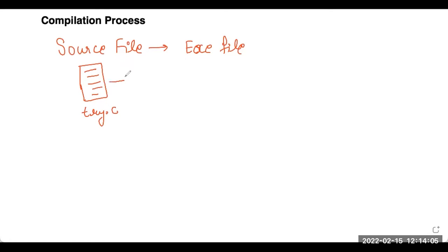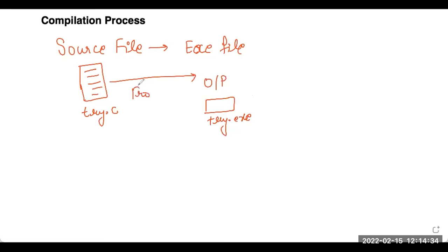Save it with the try.c extension. When you compile this source file, the output you will receive will be try.exe. So ever wonder how this source file gets converted into try.exe? Under this process, there are several translators that play their role — not just one, but a number of translators responsible for converting your program into the executable state.